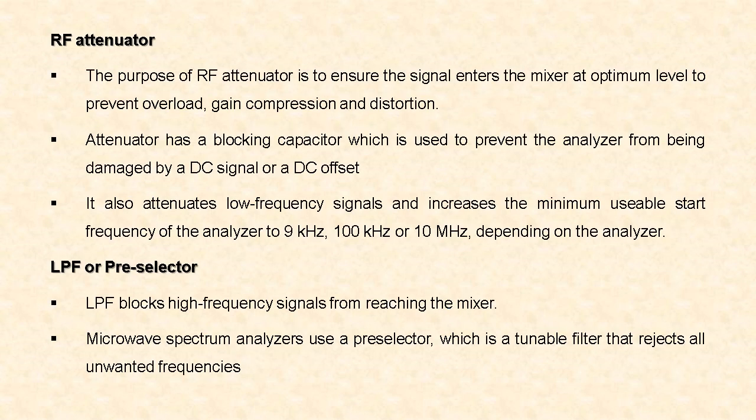First, the RF attenuator. The input RF signal first enters the RF attenuator, which is used to ensure the signal enters the mixer at optimum level to prevent overload, gain compression, and distortion. It has a blocking capacitor which is used to prevent the analyzer from being damaged by a DC signal or DC offset. The RF attenuator attenuates low-frequency signals and increases the minimum usable start frequency of the analyzer to 9 kHz, 100 kHz, or 10 MHz depending on the analyzer.